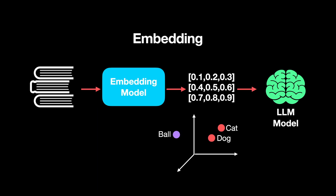What exactly is embedding? Embedding is a type of representation in numeric vector format. Embeddings allow words with similar meanings to have similar representations. For example, with the inputs 'ball', 'cat', and 'dog' in a small three-dimensional embedding space, the semantically similar words 'cat' and 'dog', which represent animals, are closer together compared to 'ball'. The job of the embedding model is to produce vectors where semantically similar items are represented closer together.